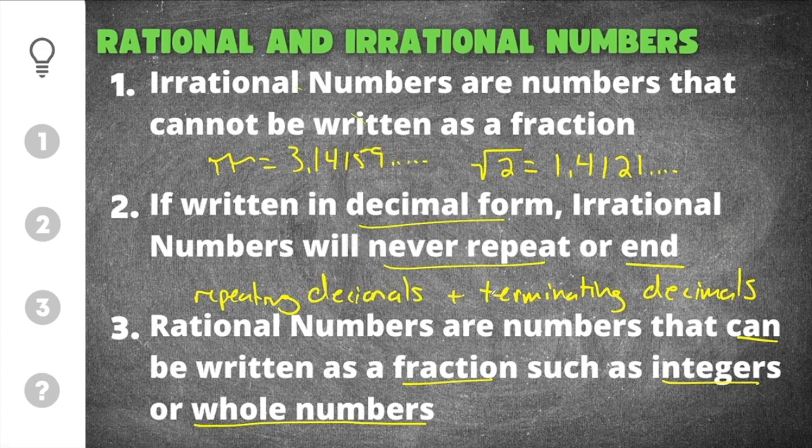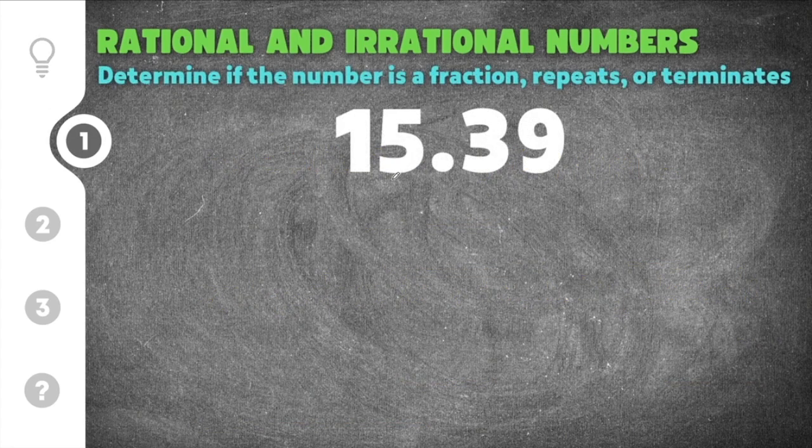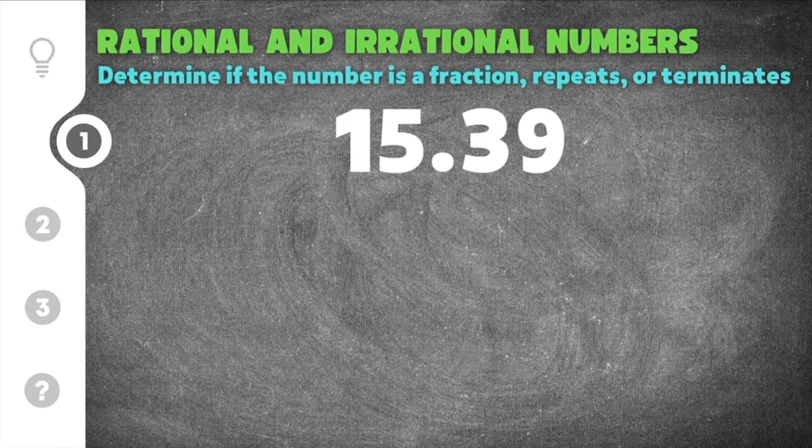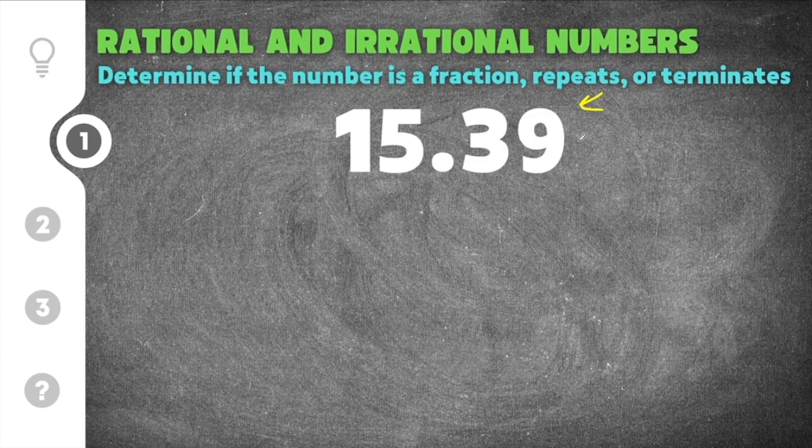Let's go ahead and jump to our first practice problem. This first practice problem on rational and irrational numbers gives us 15.39. All we have to do is say whether it's rational or irrational. Now if you look at this decimal, this decimal stops right there at 9 so it ends at 9. Because it ends,